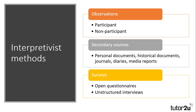Interpretivists prefer more qualitative methods of research than positivists. Methods such as observations — either participant or, to a lesser extent, non-participant — give them a first-hand account of human behaviours. Participant observations also allow researchers to experience the activities of the group, which heightens their understanding of the group's experience. Secondary sources, such as personal and historical documents, also give a greater insight into the lives of others. While the use of surveys focuses on gathering written and verbal accounts of meanings and motivations through open-ended questionnaires and unstructured interviews that allow those being researched a voice.